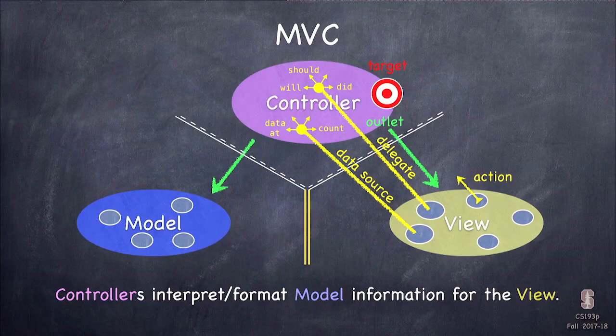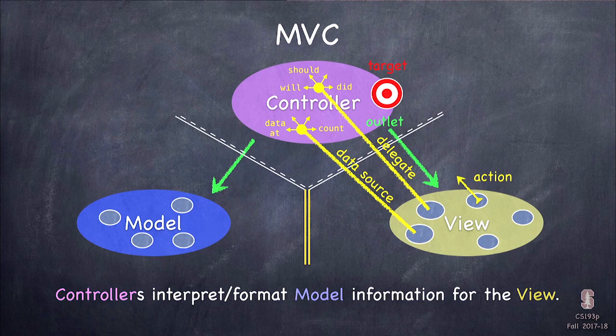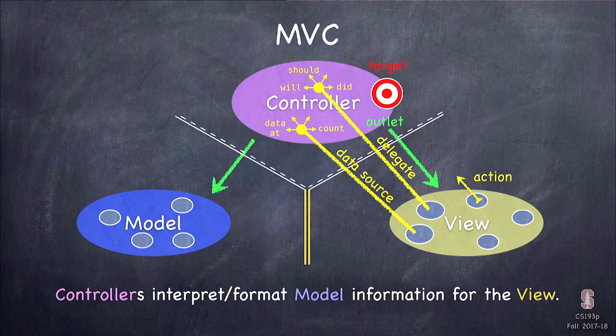That covers the view-to-controller communication: it's structured and predefined. The controller's primary job in MVC is to interpret and format the model's information for the view — and it also goes the other way, interpreting user interaction in the view for the model. The controller is the center of all communication.